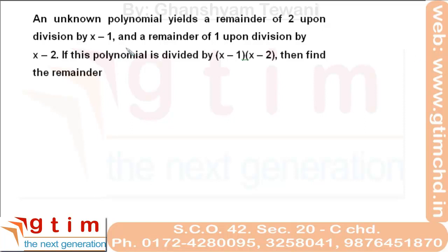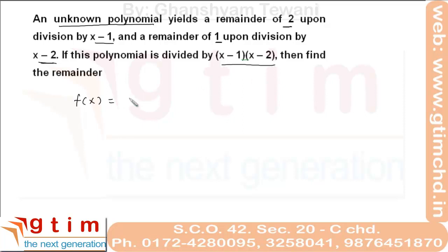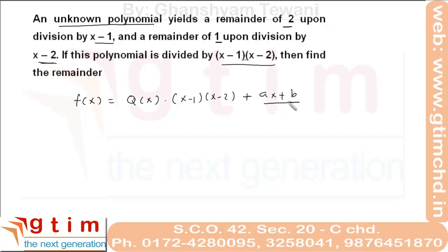Solve this equation. The problem: when an unknown polynomial is divided by x minus 1 it leaves remainder 2; when divided by x minus 2 it leaves remainder 1. We have to find the remainder when it is divided by the quadratic. Let the unknown polynomial be f(x). With respect to this divisor, we write f(x) equal to the quotient times the divisor plus the remainder. How do we write the remainder?